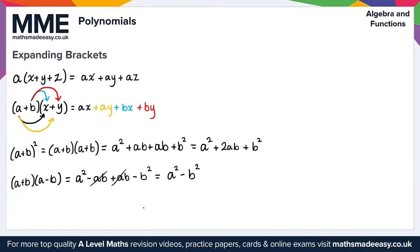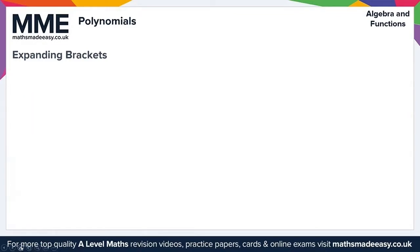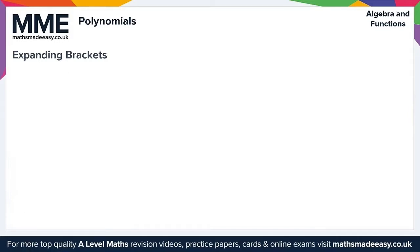Finally we move on to the case where we have longer brackets. Let's clear the screen to give ourselves enough room, as this is quite a lengthy example. So let's take a look at the case for longer brackets. We've got (a plus b plus c) multiplied by (w plus x plus y plus z).